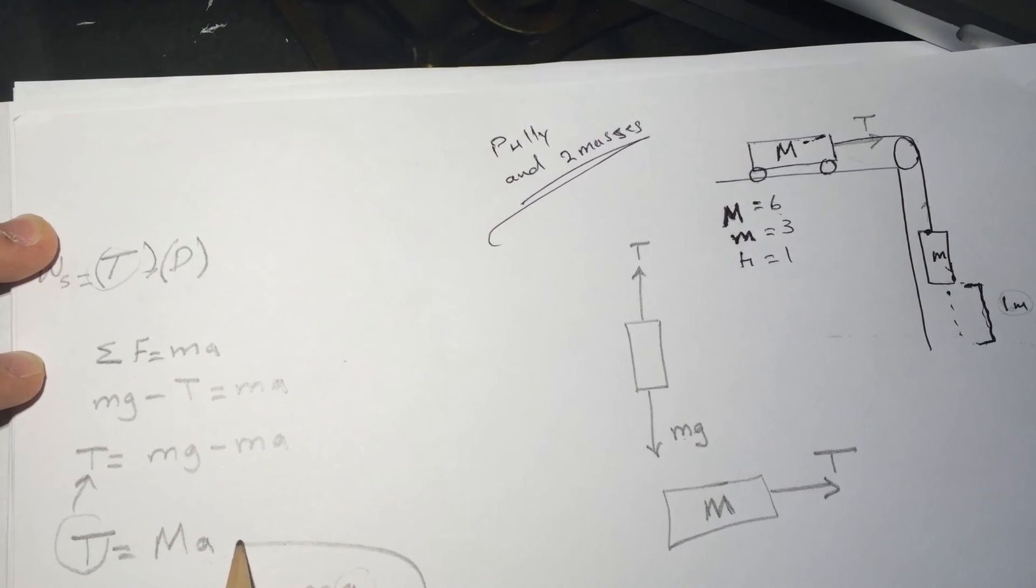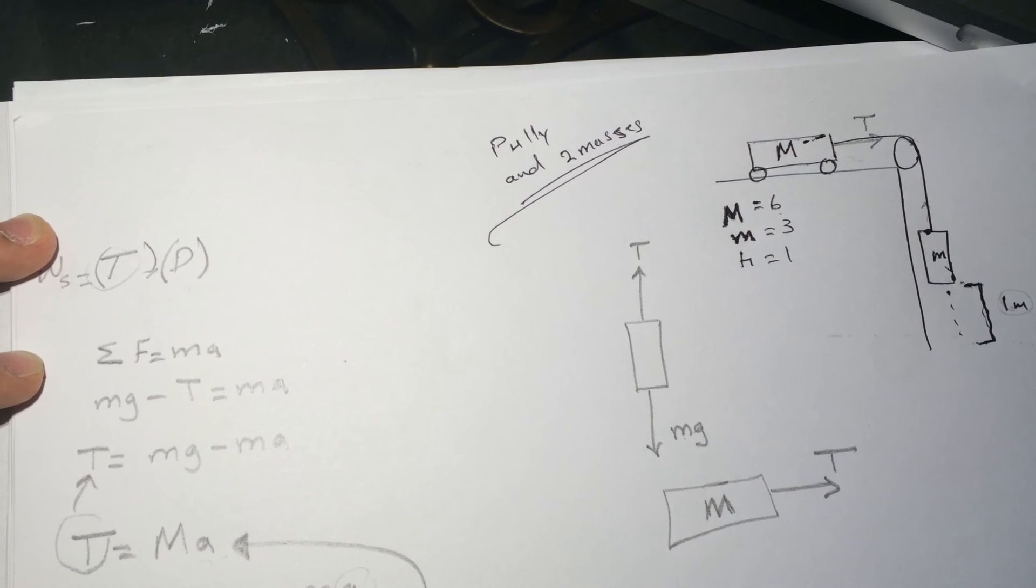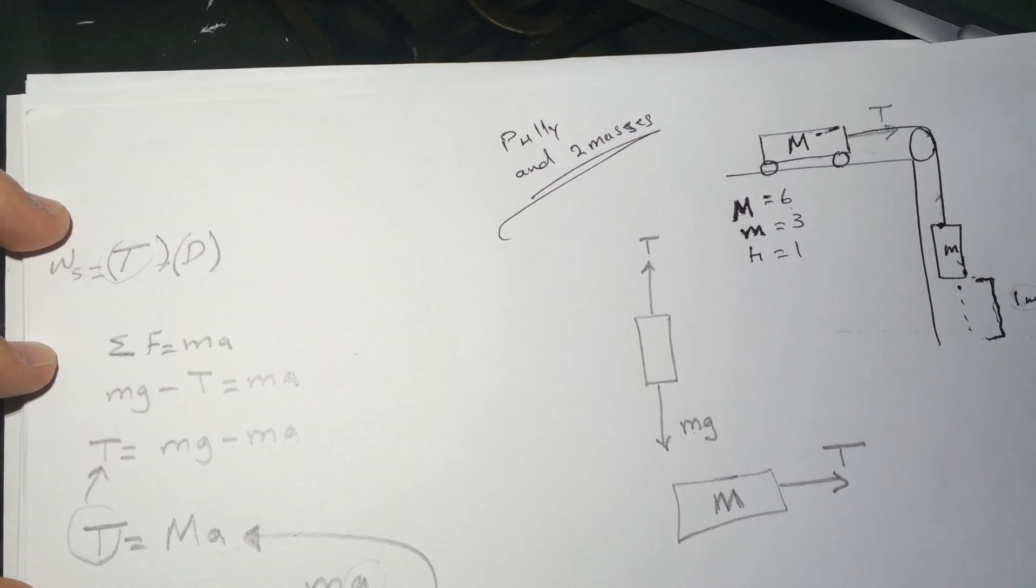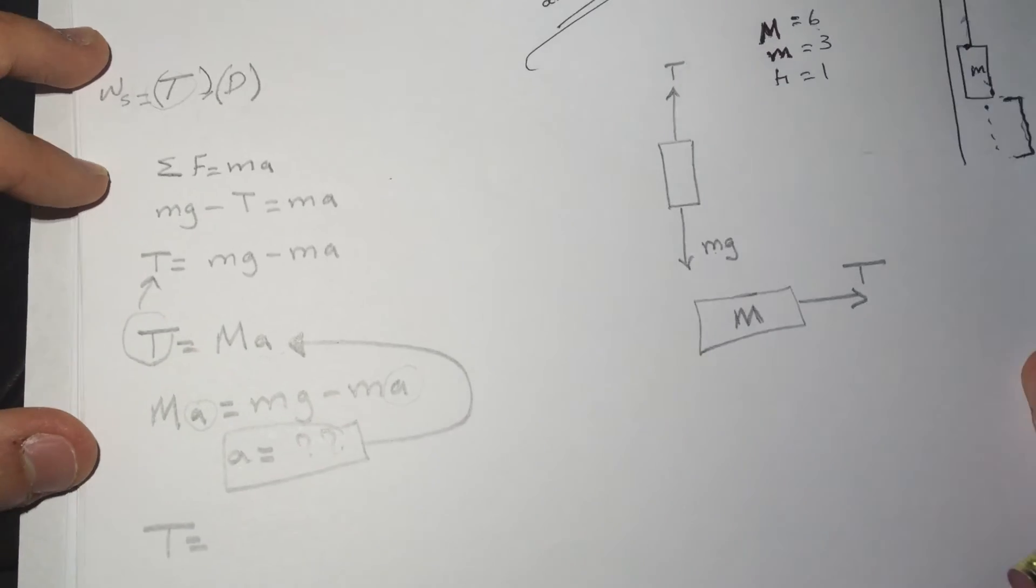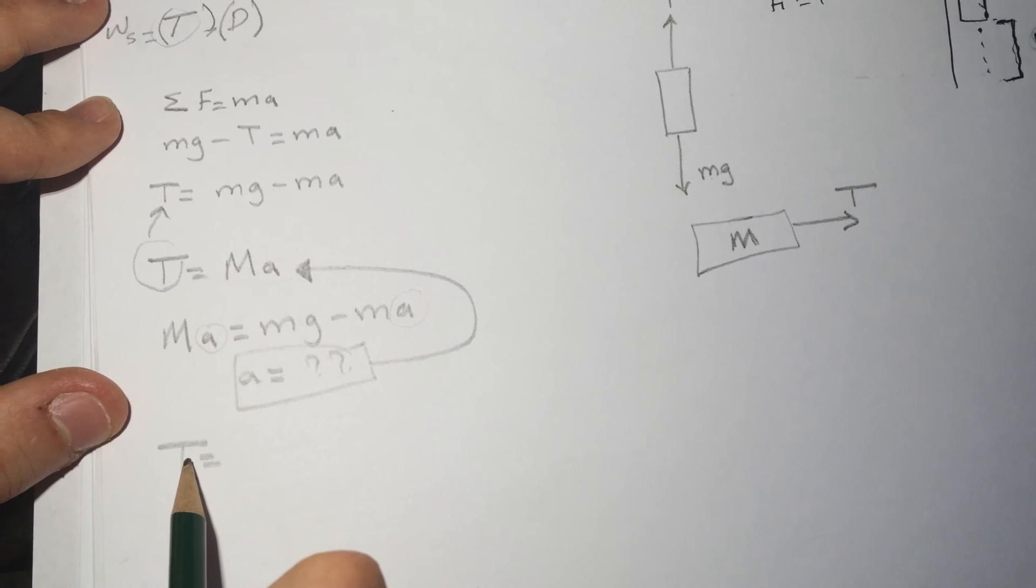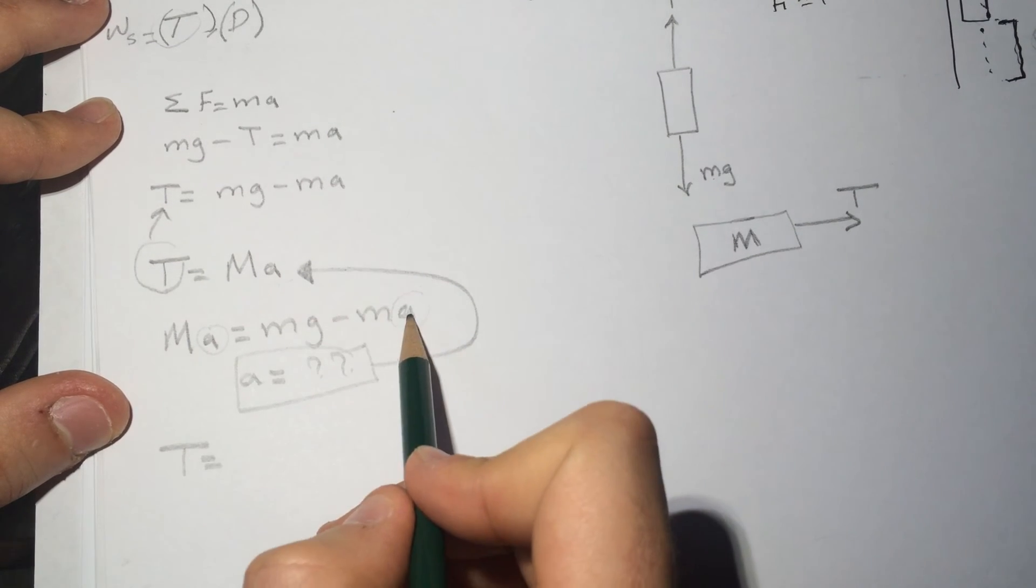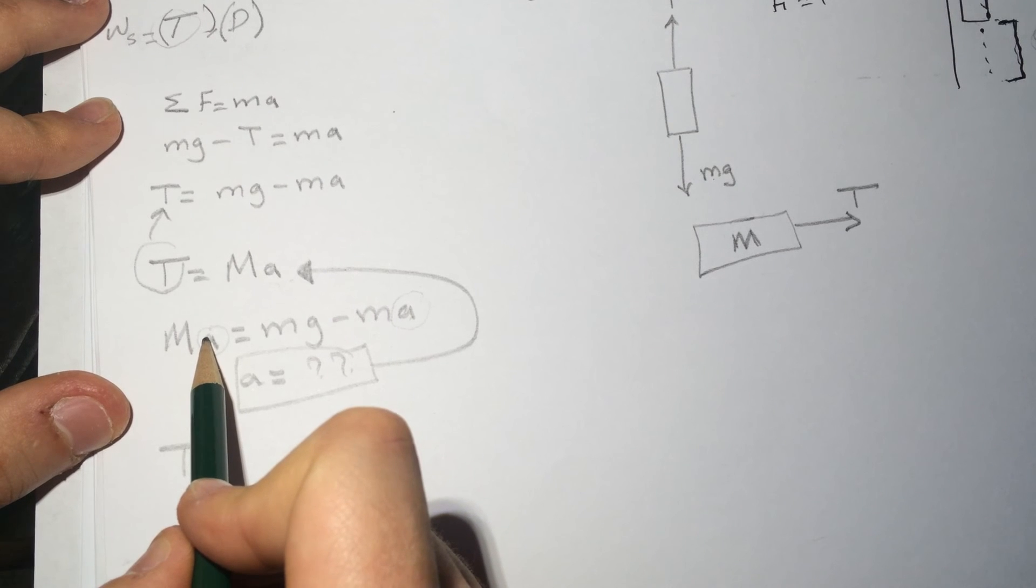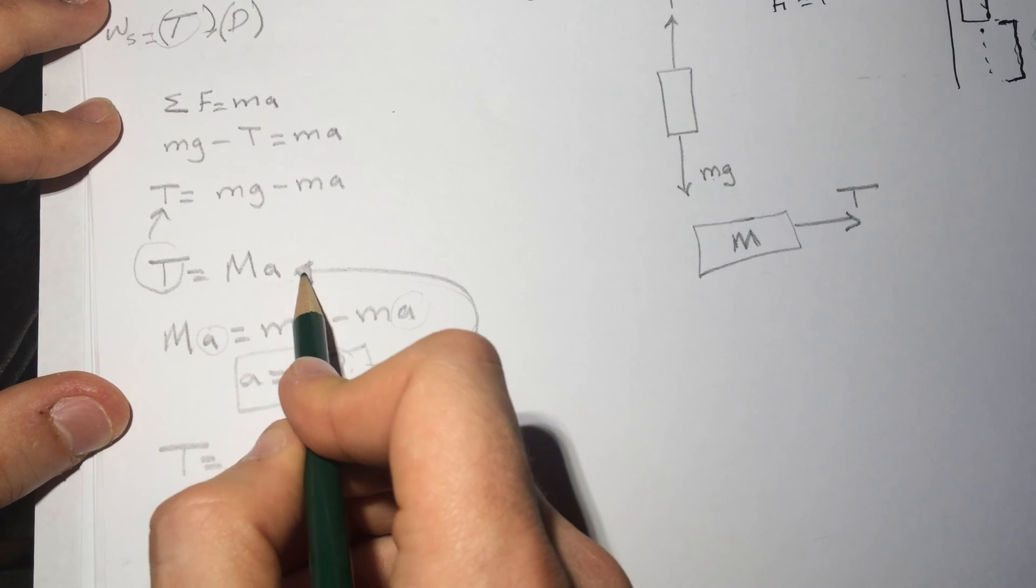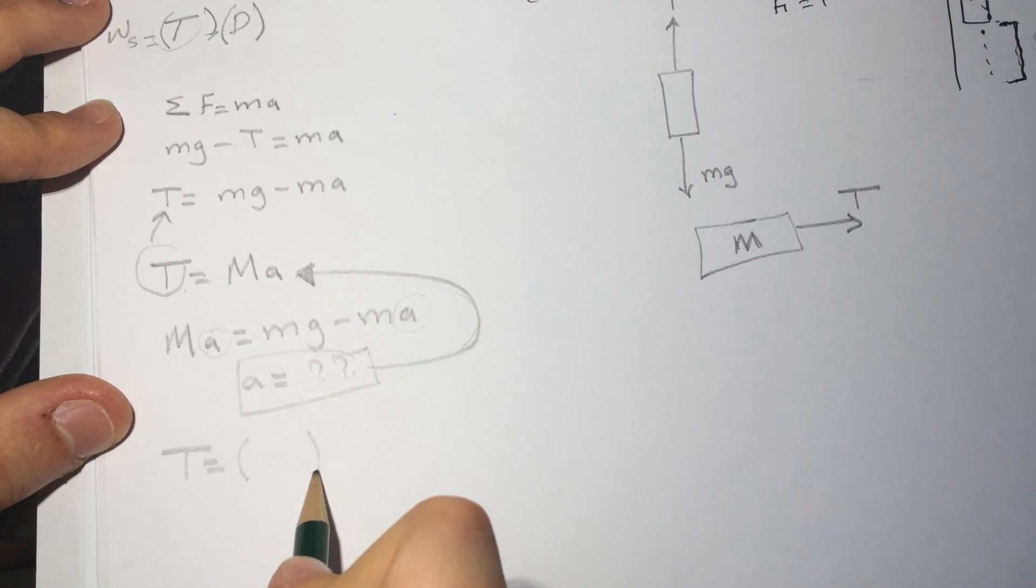And then when you get the value for a, just substitute it back into this equation and you'll get the tension. So you'll solve for the a here and get the value for it, and then substitute it back into here and you'll get the tension, you'll get a value for the tension.